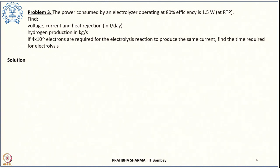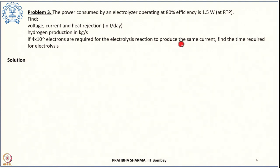The third problem: an electrolyzer has efficiency of 80% and consumes power of 1.5 watt at room temperature and pressure. We need to find the corresponding voltage and current, how much heat is rejected in joule per day, the hydrogen production in kg per second, and the time required for electrolysis given 4×10⁻⁵ electrons.